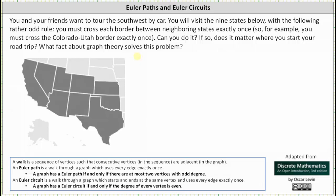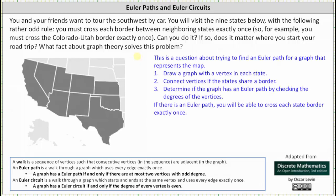Let's answer this last question first. This question is about trying to find an Euler path for a graph that represents the map. Recall that an Euler path is a walk through a graph which uses every edge exactly once, which means if the graph that represents the map has an Euler path, then you can cross each border between neighboring states exactly once.